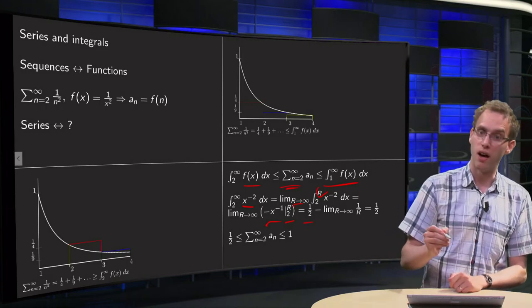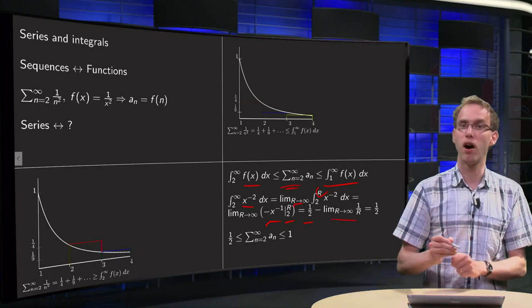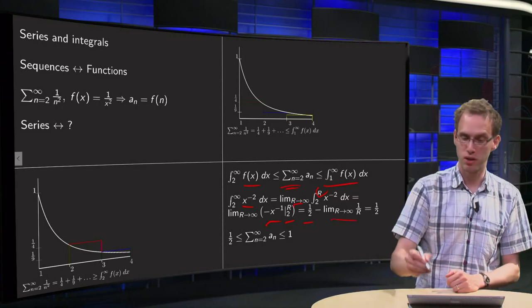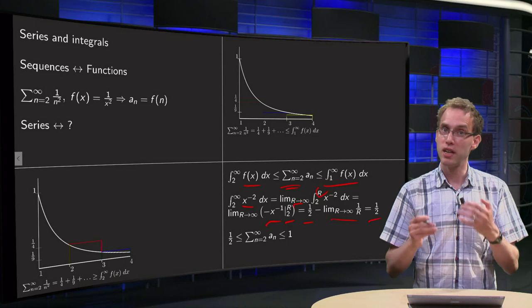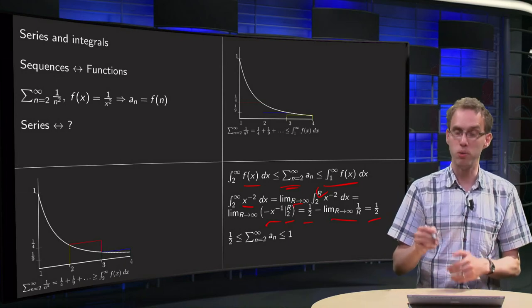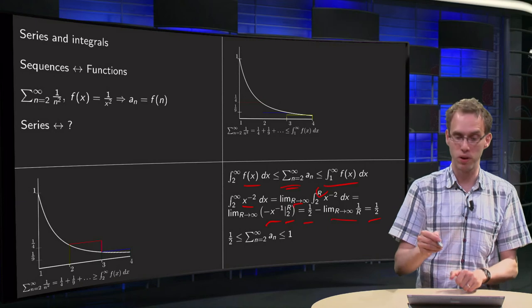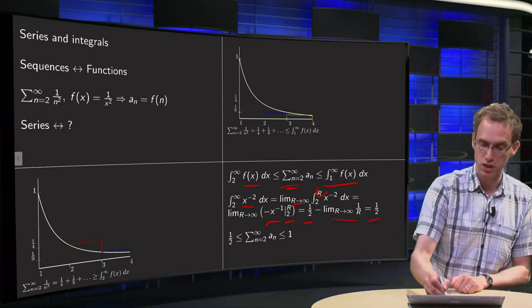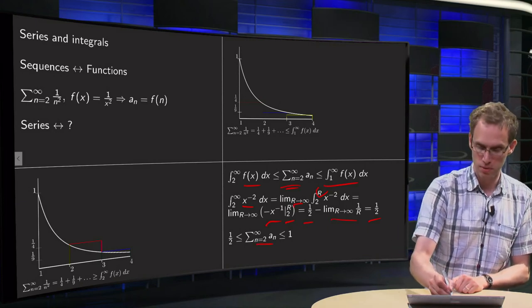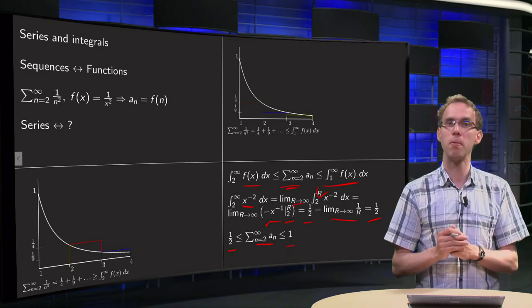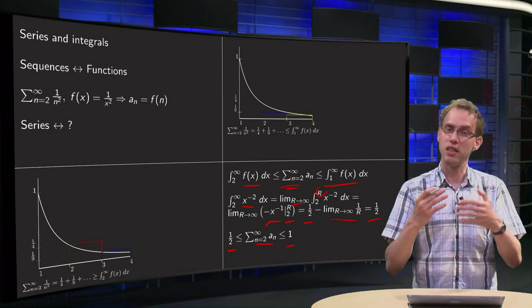Upper boundary gives a limit r to infinity of 1 over r. That limit equals 0, so we get 1 over half. And similarly we can do the other integral, only the lower boundary is changing to 1, so I know that my series starting at 2 is between 1 half and 1. So here you clearly see the similarities.